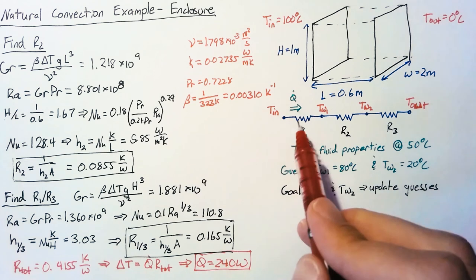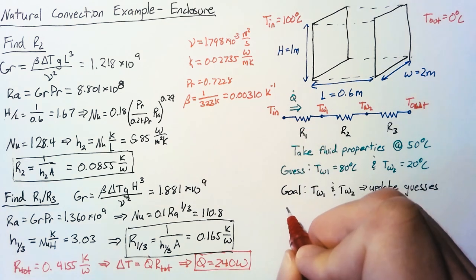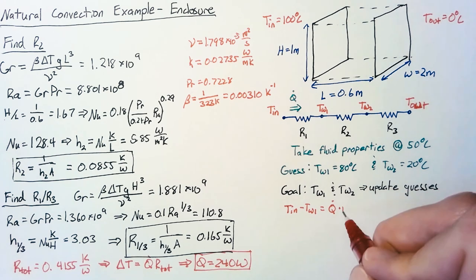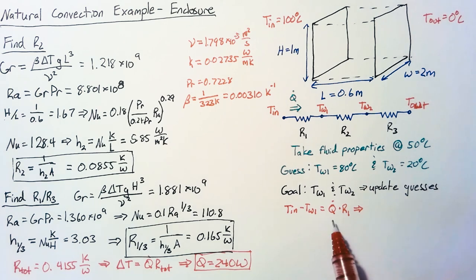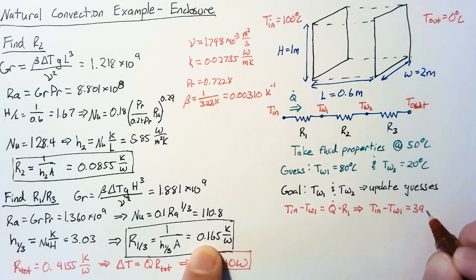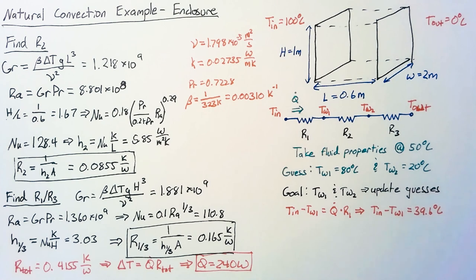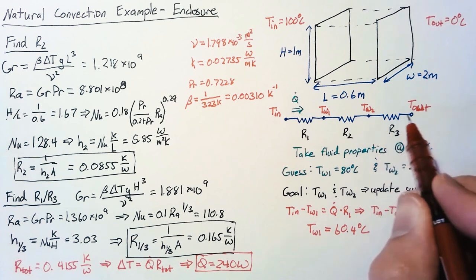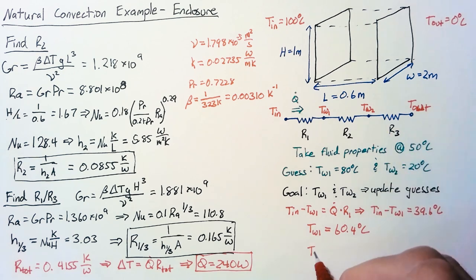So with that we can use delta T's over individual resistances. And so our delta T, T_in minus T_W1, is going to be equal to that same Q dot multiplied by R1. And what this gives us is 240 multiplied by our R1 value ends up being 39.6 degrees Celsius. So 100 minus T_W1 gives us 39.6. So we know that T_W1 is going to be equal to 60.4 degrees Celsius. Now from symmetry we know that the delta T over R3 is going to be the same as R1. So that means that the difference here is also 39.6 which tells us that T_W2 is going to be 39.6 degrees Celsius.